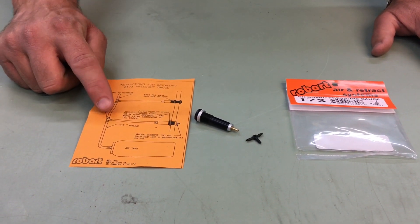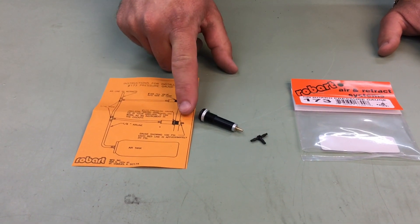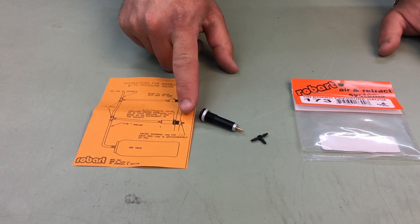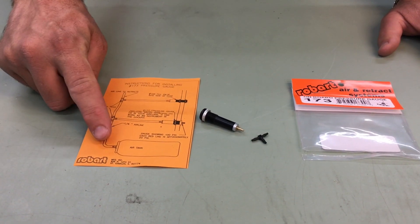Or you come down to a T and then come over to the pressure gauge. The pressure gauge has the indicator that will come out, and each line on the indicator is 20 PSI. And then you go to your air tank.